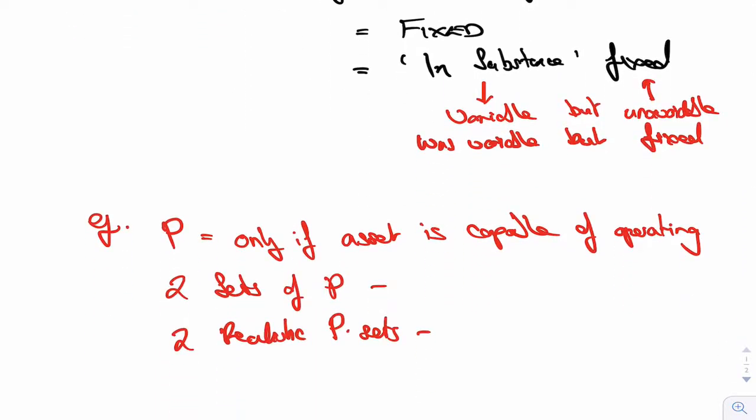Here's a variable payment. Only if the asset is capable of operating do I have to pay it. So it's not fixed because it's variable because it depends on something happening. But look, is it capable of operating? Well, of course it's capable of operating. So that's unavoidable, and so therefore that's not actually a variable payment. That's a fixed payment in-substance. It's a fixed payment.